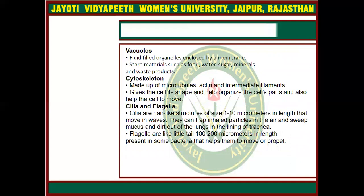The next organelle is vacuoles. Vacuoles are the fluid-filled organelles enclosed by a membrane. They have storage capability and store the food which has been synthesized, so that plants can use the stored food material from the vacuoles. They are also present in animals, but are smaller in size, while vacuoles present in plant cells are larger in size.